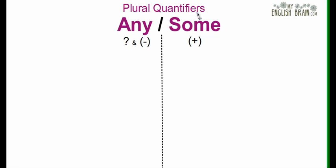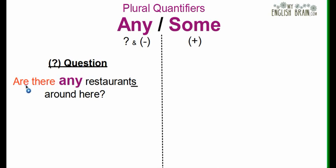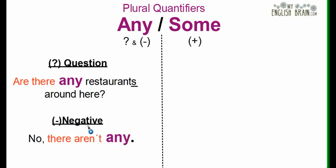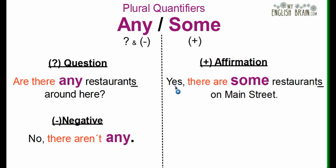Now let's look at the plural quantifiers 'any' and 'some.' We use 'any' in questions and negatives. For example, in a question: Are there any restaurants around here? We also use 'any' in the negative: No, there aren't any. When we use 'some,' we use it for affirmative, positive forms — for example: Yes, there are some restaurants on Main Street.